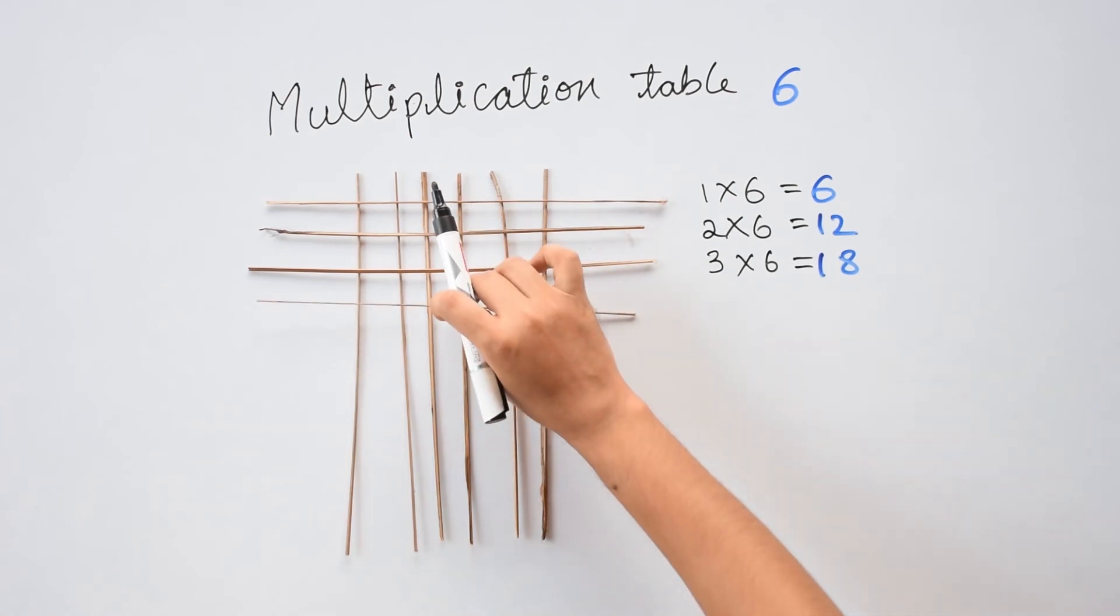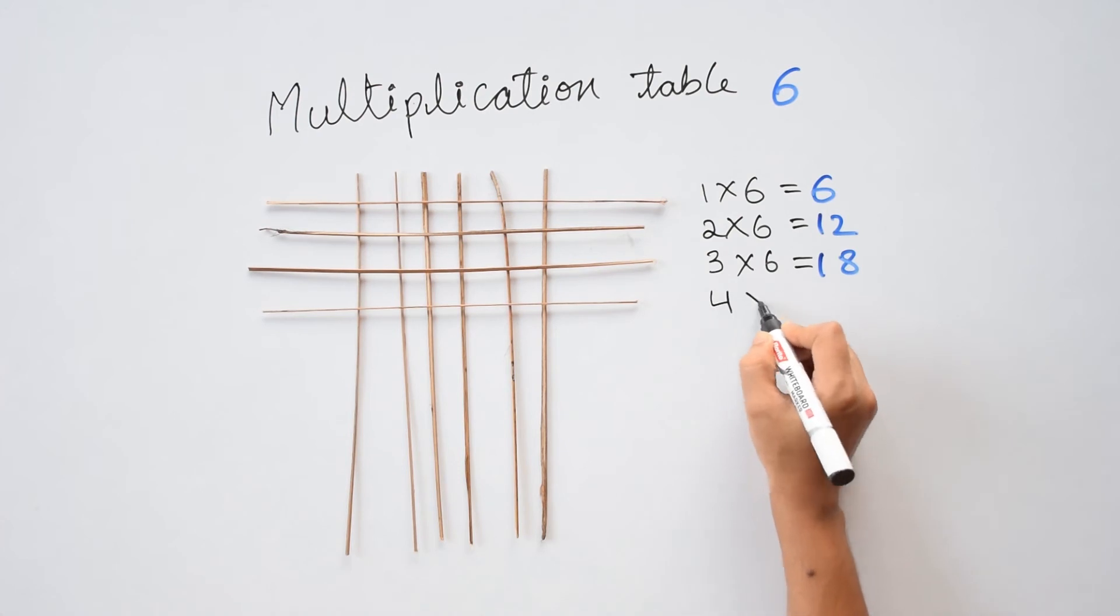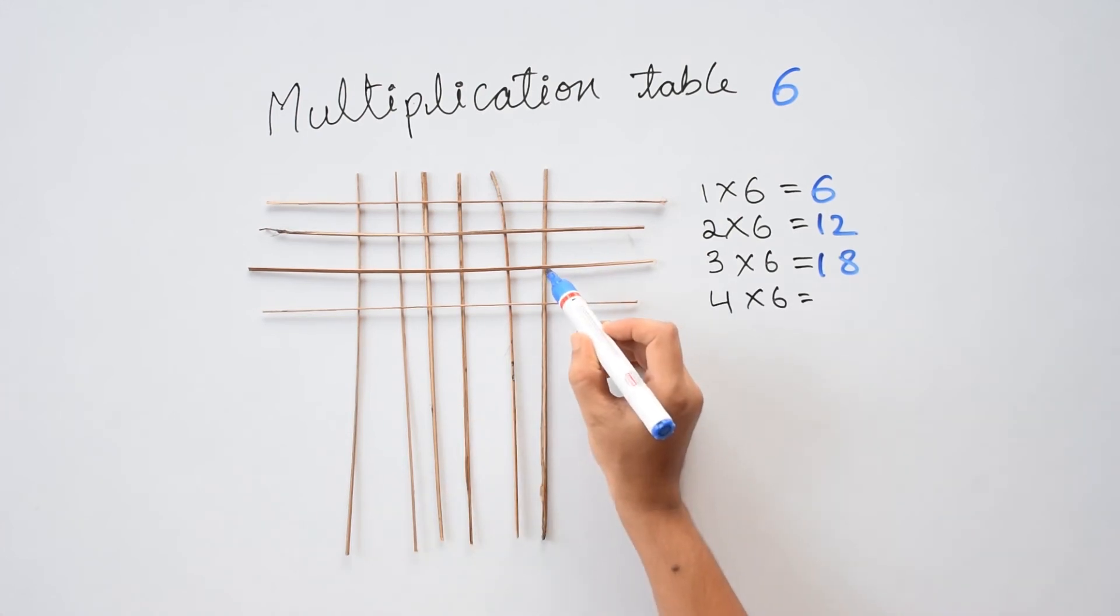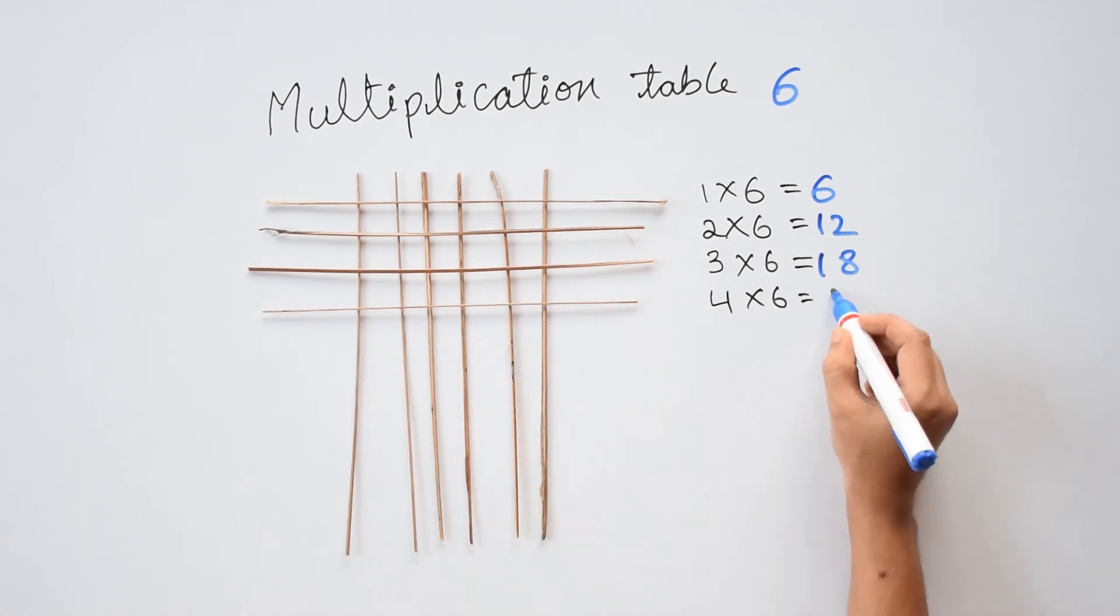Next, I am going to keep one more stick. So 4 sticks times 6 equals to, till here I know it's 18. Going ahead, 19, 20, 21, 22, 23, 24. So 4 times 6 is 24.